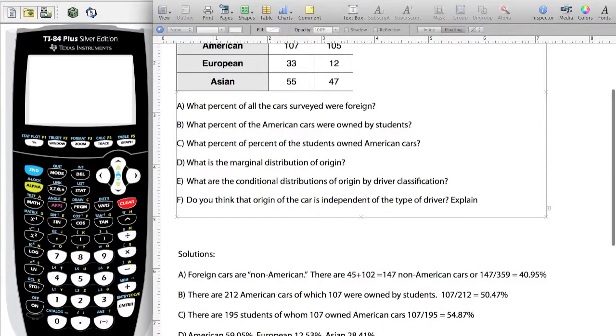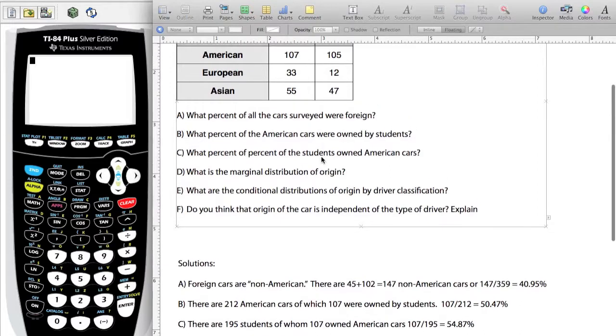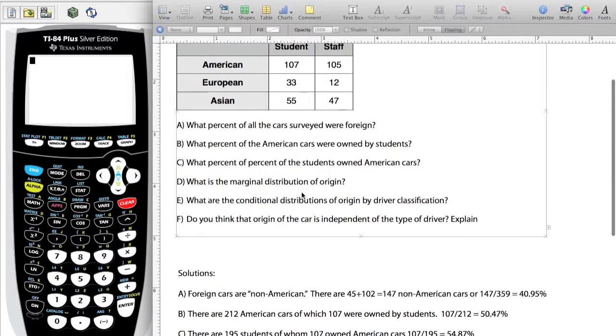American would be 59.05%, European cars would be 12.53%, and Asian would be 28.47%. Double check your answers. That one should be fairly easy. We could also ask, what is the marginal distribution of type of driver? Out of the cars, what percentage were students? What percentage were staff members?